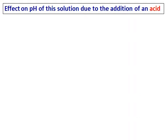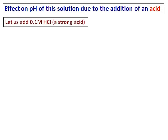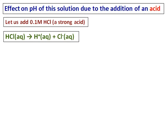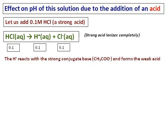Let's see what will happen if I add some acid into the solution of sodium acetate and acetic acid. Let me add 0.1 molar hydrochloric acid, a strong acid. Hydrochloric acid ionizes completely and therefore gives 0.1 hydrogen ion concentration and 0.1 chloride ion. Then the conjugate base acetate reacts with this hydrogen ion to give me acetic acid.